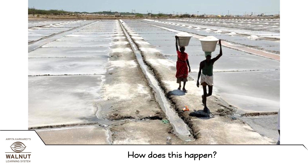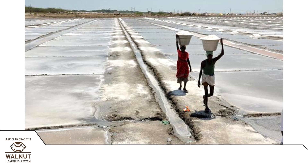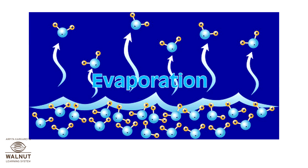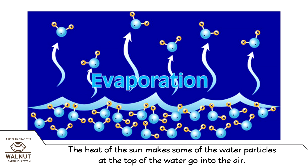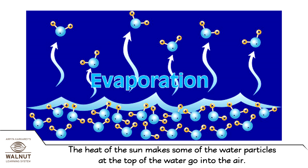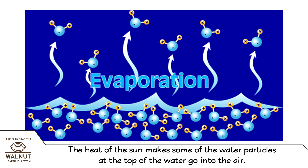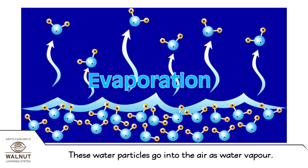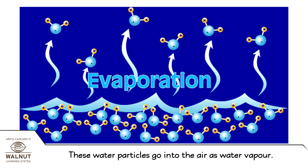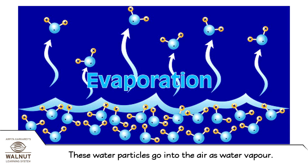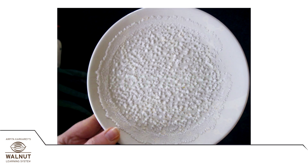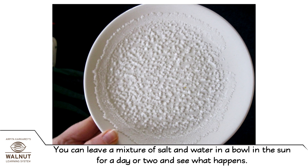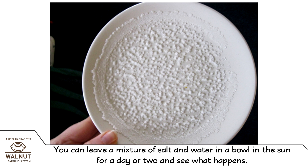How does this happen? How does evaporation happen? The heat of the sun makes some of the water particles at the top of the water go into the air. These water particles go into the air as water vapor. You can leave a mixture of salt and water in a bowl in the sun for a day or two and see what happens.